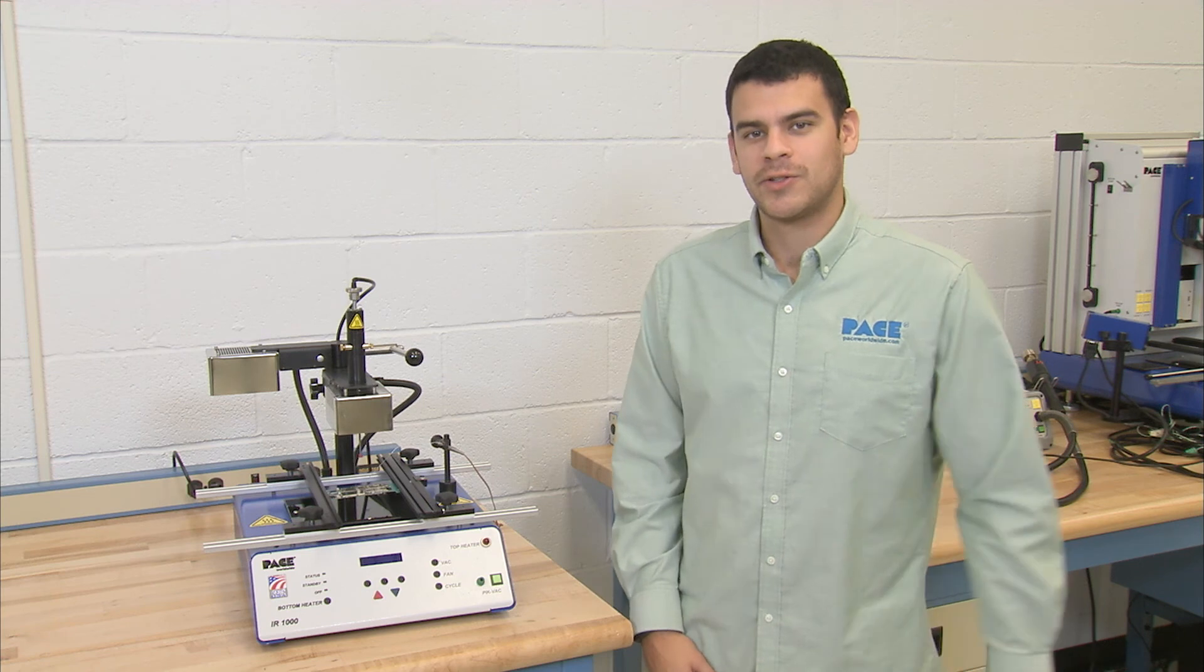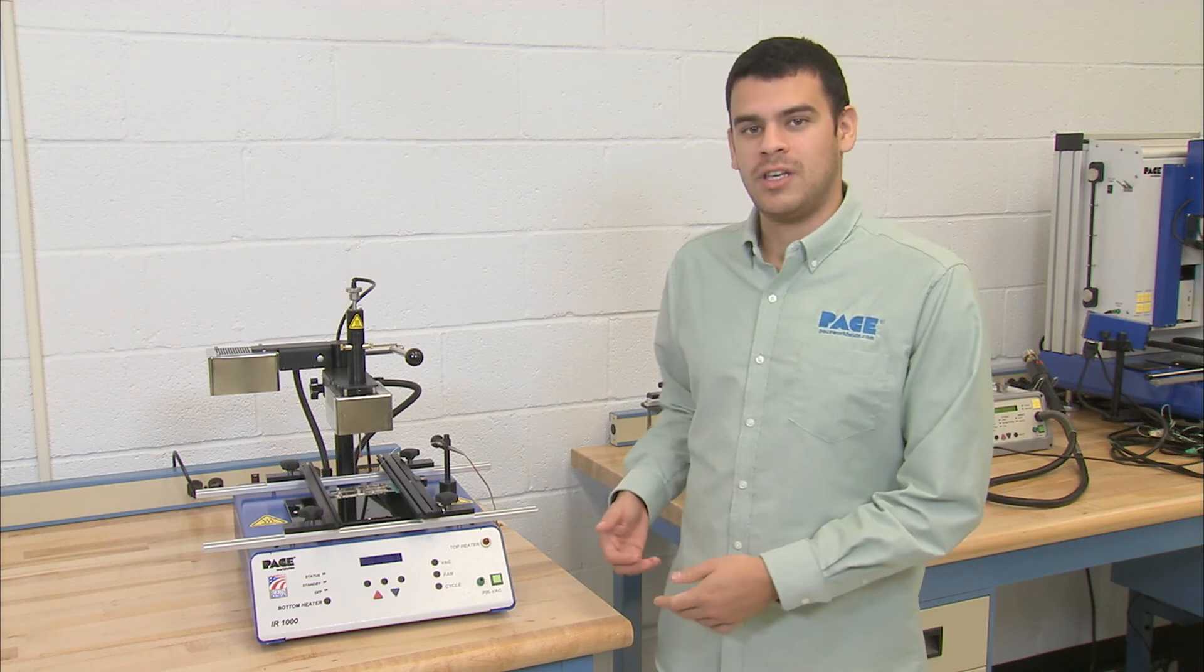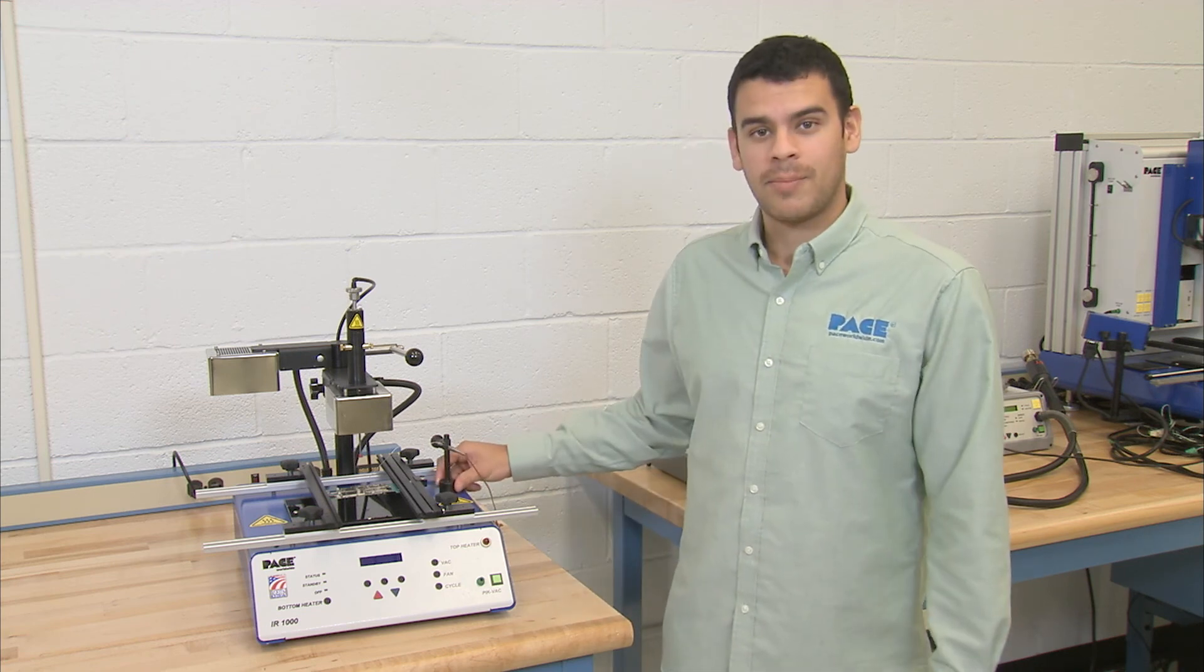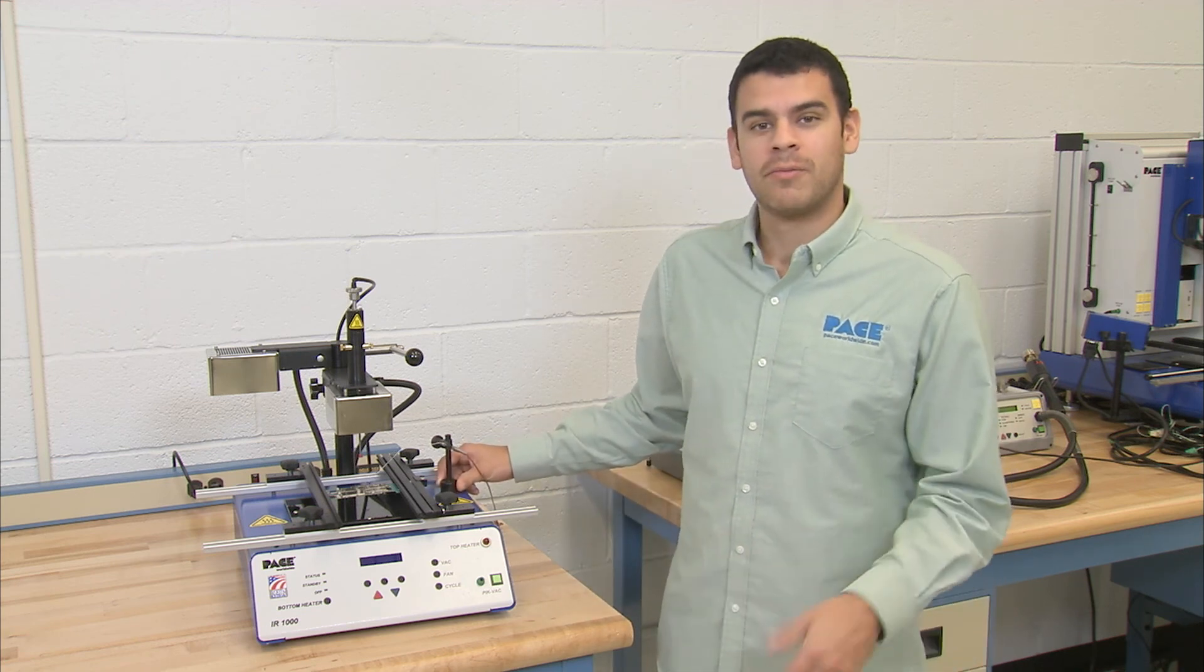So that's how you remove a BGA component using the IR-1000. The IR-1000 can save up to 50 different profiles internally and comes with everything you see here, including the magnetic thermocouple. If you need any more information or have any questions on this unit, please visit our website at paceworldwide.com. Thanks for watching.